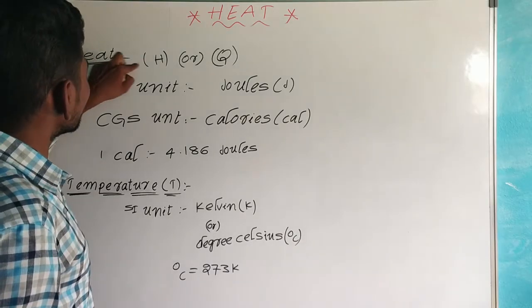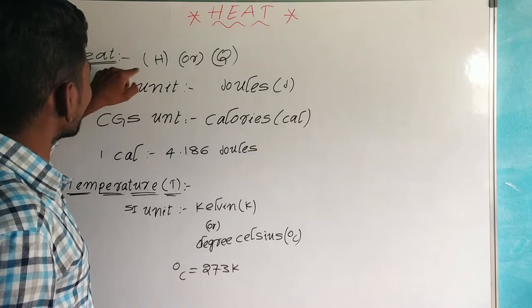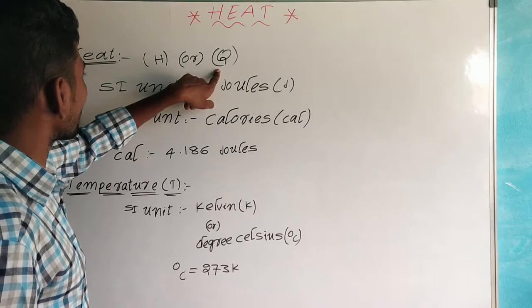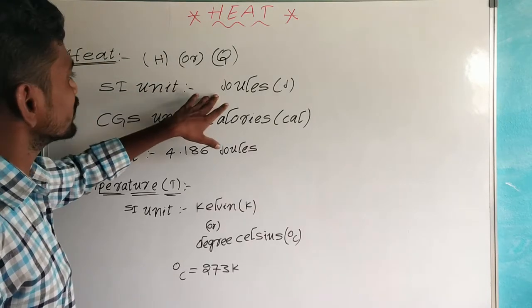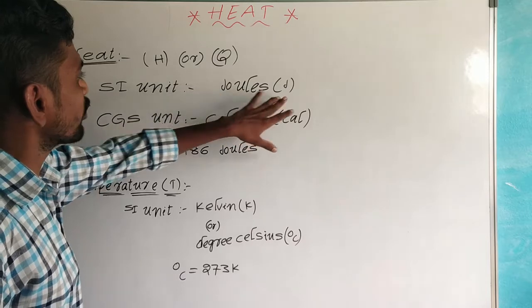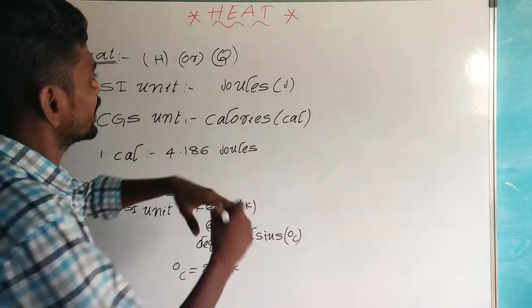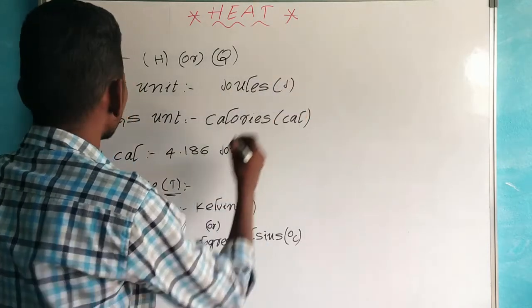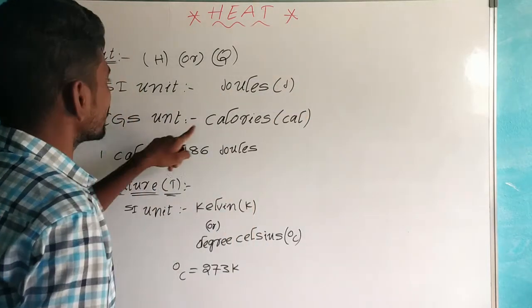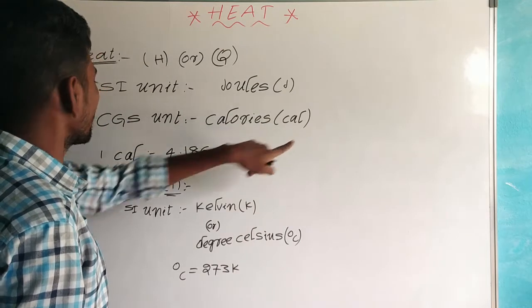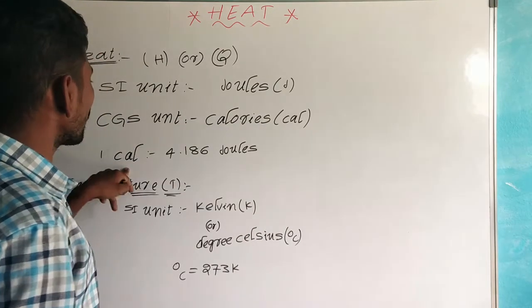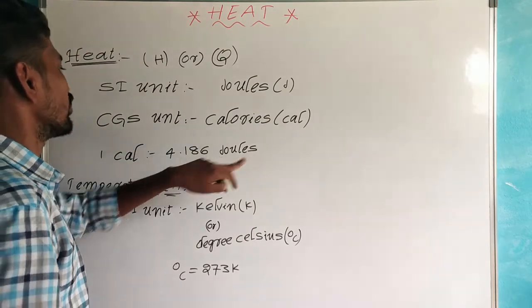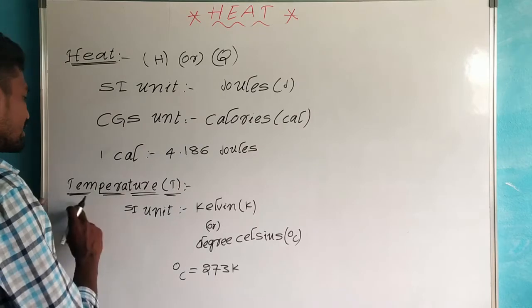The hotter body is the thermometer and the colder body is the water. The CGS unit of heat is the calorie. One calorie is equal to 4.186 Joules.